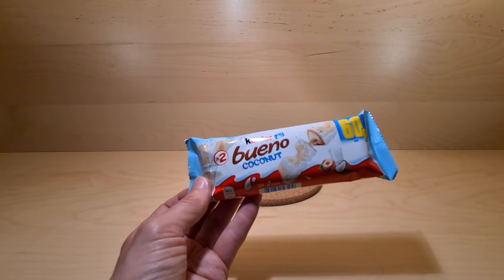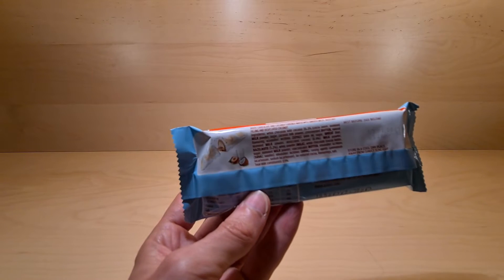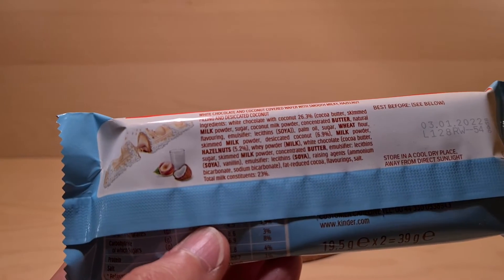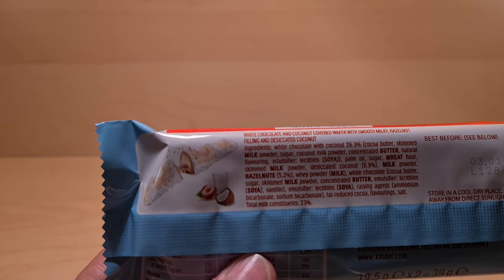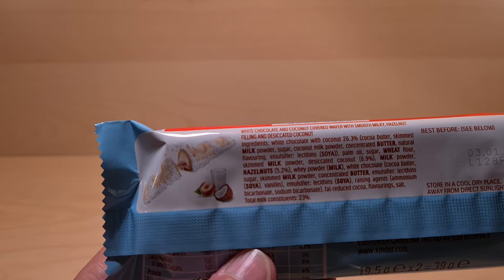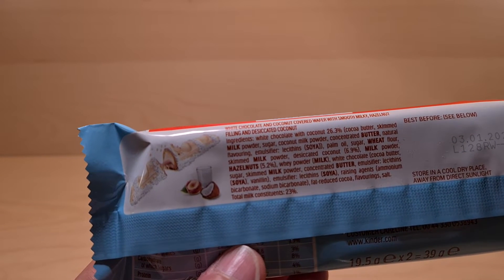So before we open, we need to reveal what's in said item for those who are interested. As I said, it is white chocolate with coconut covered wafer with smooth milky hazelnut filling and desiccated coconut.